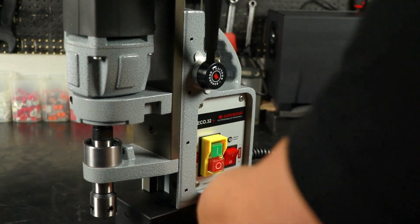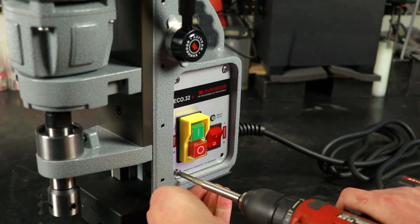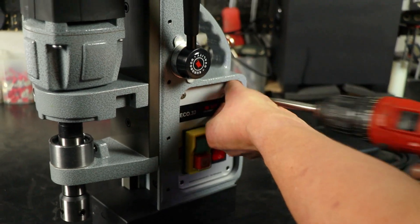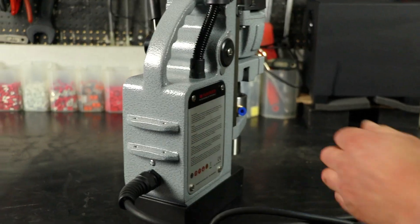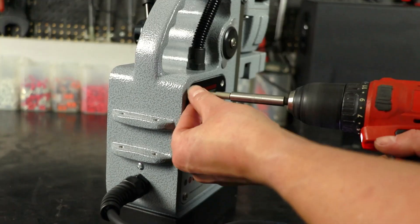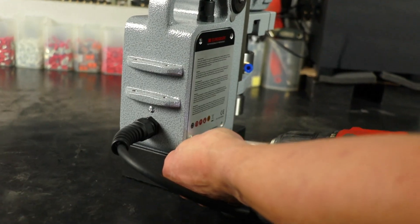Once that's done, unscrew the four screws of the front panel. And do the same for the back panel. Be careful, the back panel has two layers.